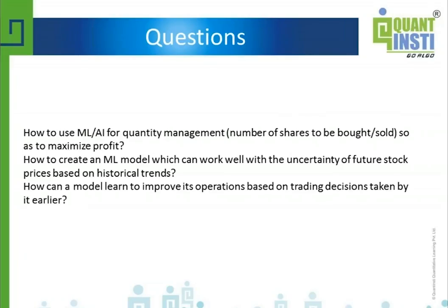On capital allocation, machine learning has something to offer. At the most basic level, a classification model predicting whether a stock will go up or down will also provide a probability for that outcome. That probability can be used as an input to a capital allocation program — the higher the probability it will go up, the more capital you allocate; lower probability means less capital; and equal probability means no capital assigned.